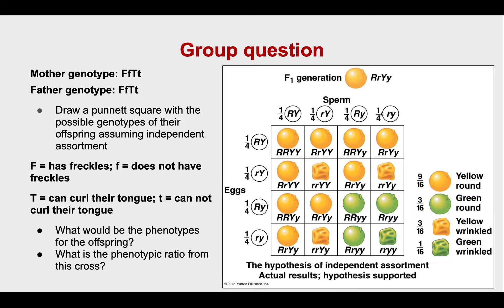Same with the father. If we write out all these possible gamete combinations, we don't want to split up the R and the Y's, because they're on different chromosomes — they're different genes that can come together to create the phenotype. So if we do a Punnett square in the same form as a one-factor cross, big R big Y crossed with big R big Y gives a certain genotype and exhibits a certain phenotype.